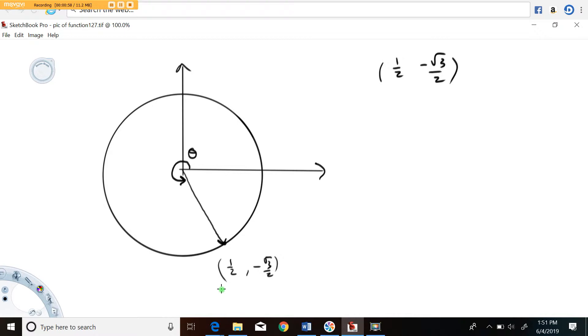Now, in the problem it was stated that this is a unit circle, which means the radius is equal to one. We also would come to that conclusion if we apply Pythagorean theorem to this. This squared plus this squared is going to equal one.